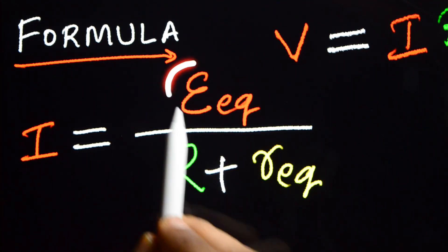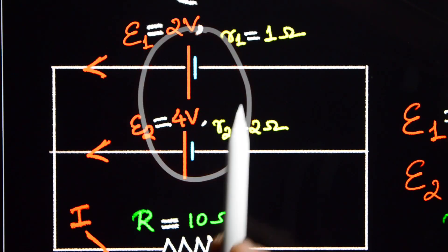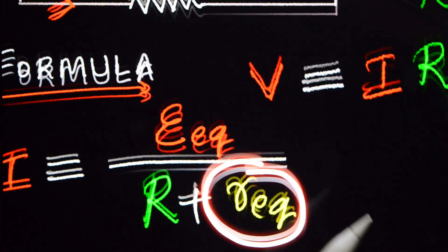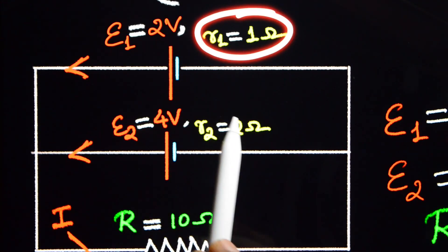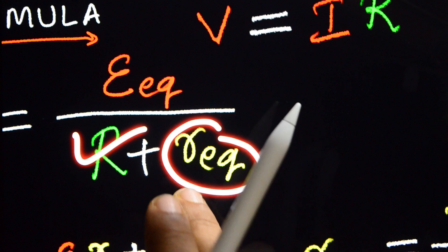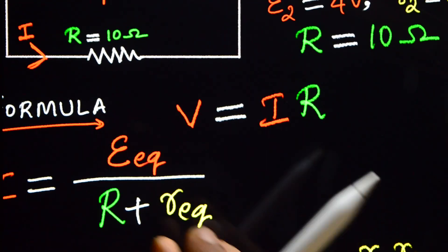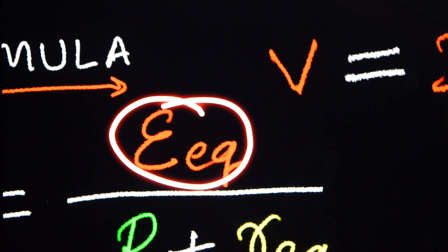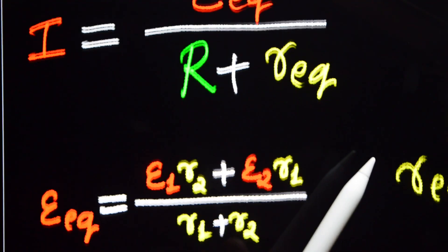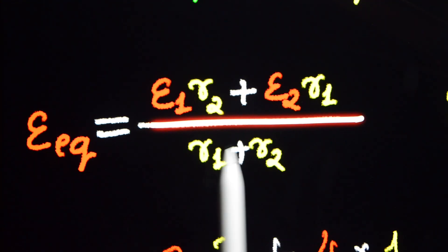We need the E equivalent and R equivalent. For two cells connected in parallel, the effective EMF is equal to: E1 into R2 plus E2 into R1, divided by R1 plus R2. The small r equivalent is the effective internal resistance of the two cells combined.